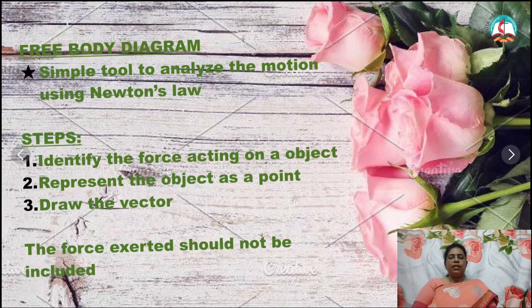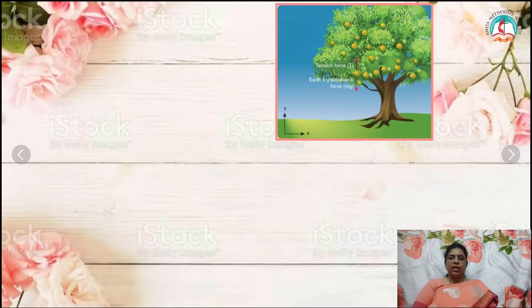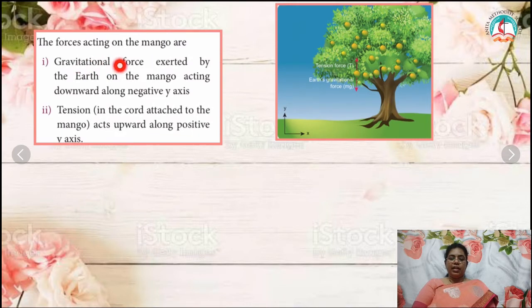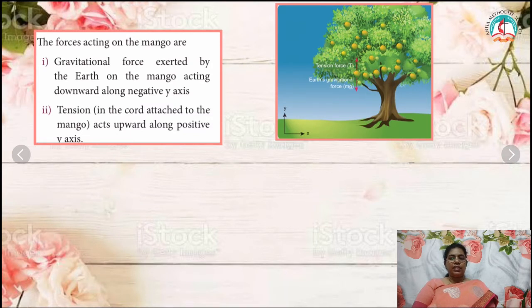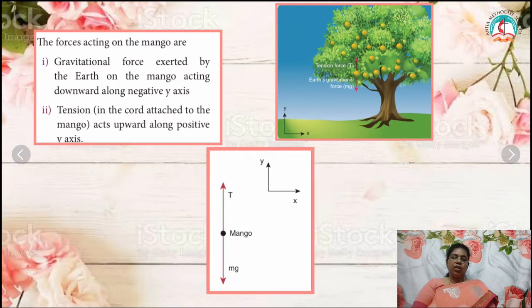Let's see one example — a mango falling from a tree. What are the forces acting on the mango? They are the gravitational force exerted by the earth on the mango, acting downwards along the negative y-axis. The other force is the tension, which acts upward along the positive y-axis, due to the cord attached to the mango. In the free body diagram, the mango acts as the point mass, with gravitational force acting downwards and tension acting upwards.